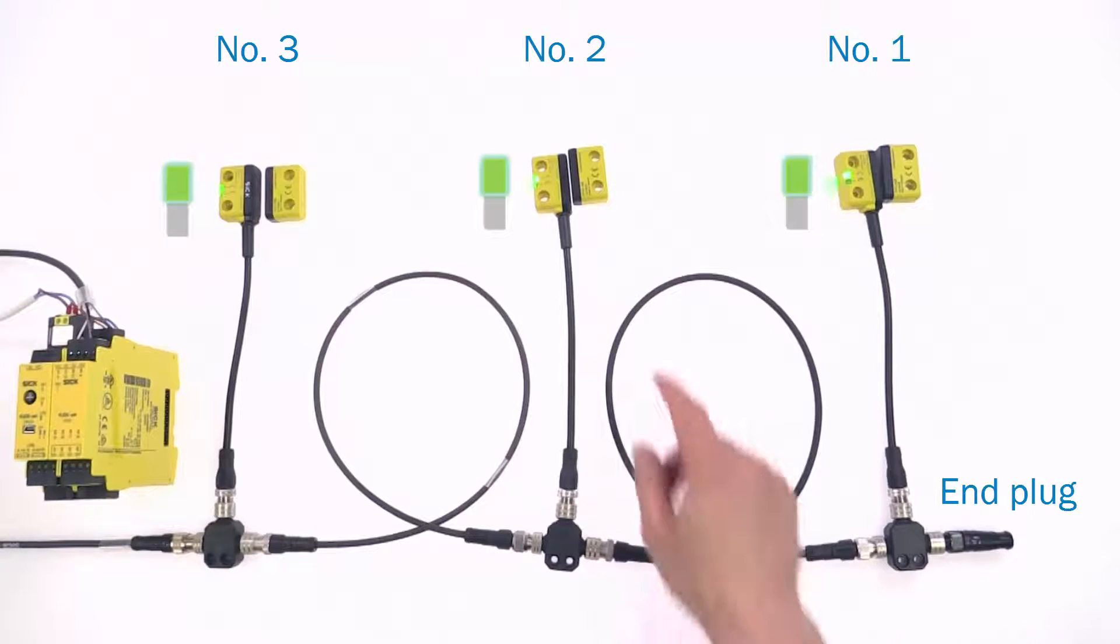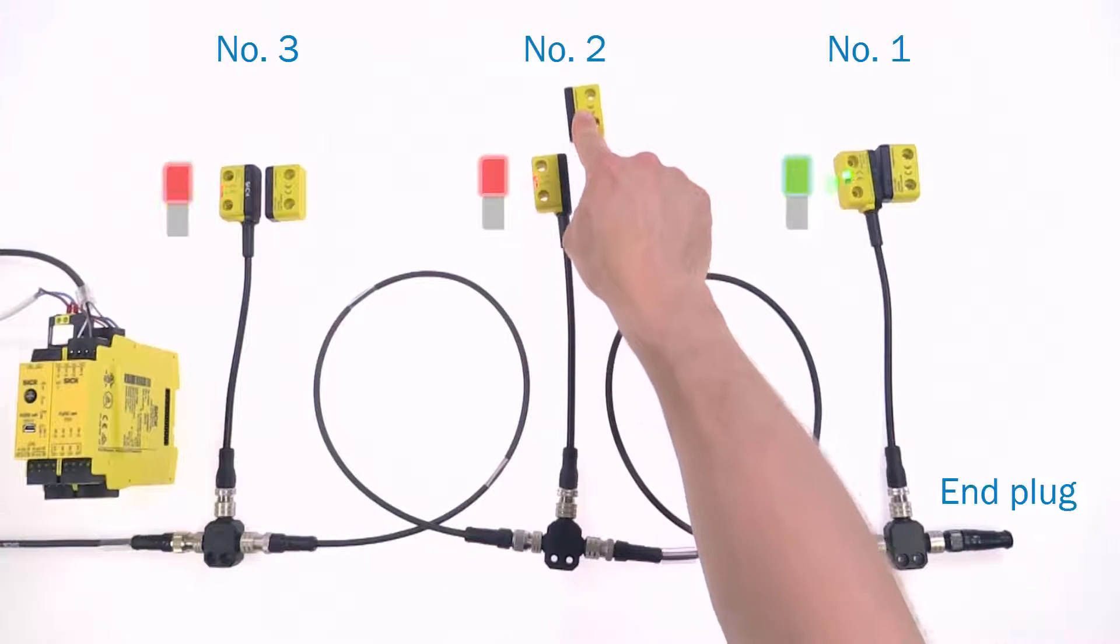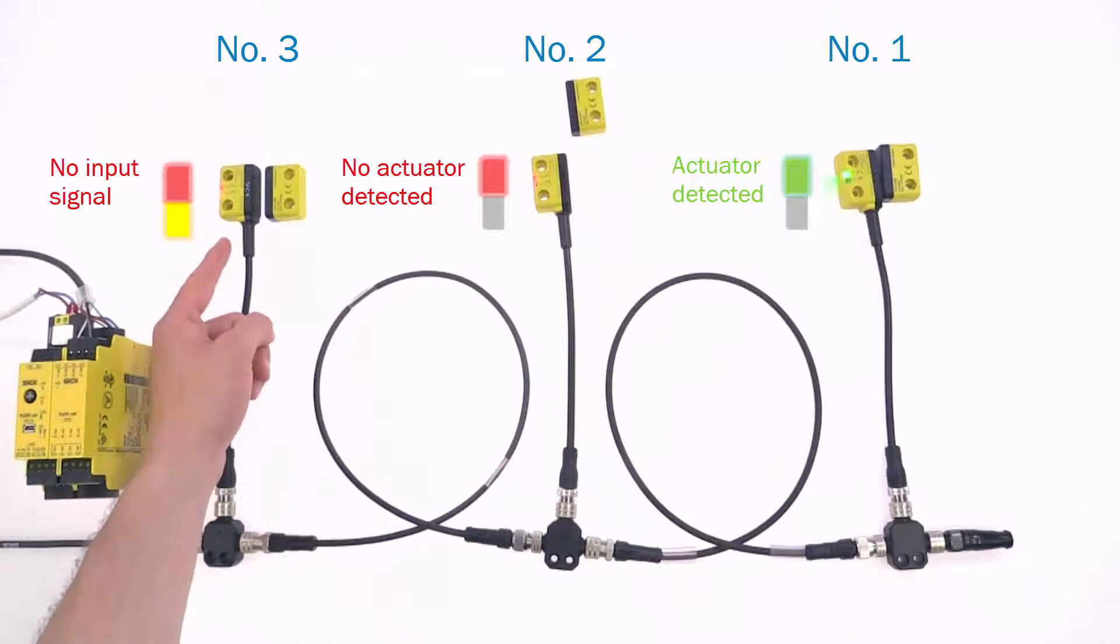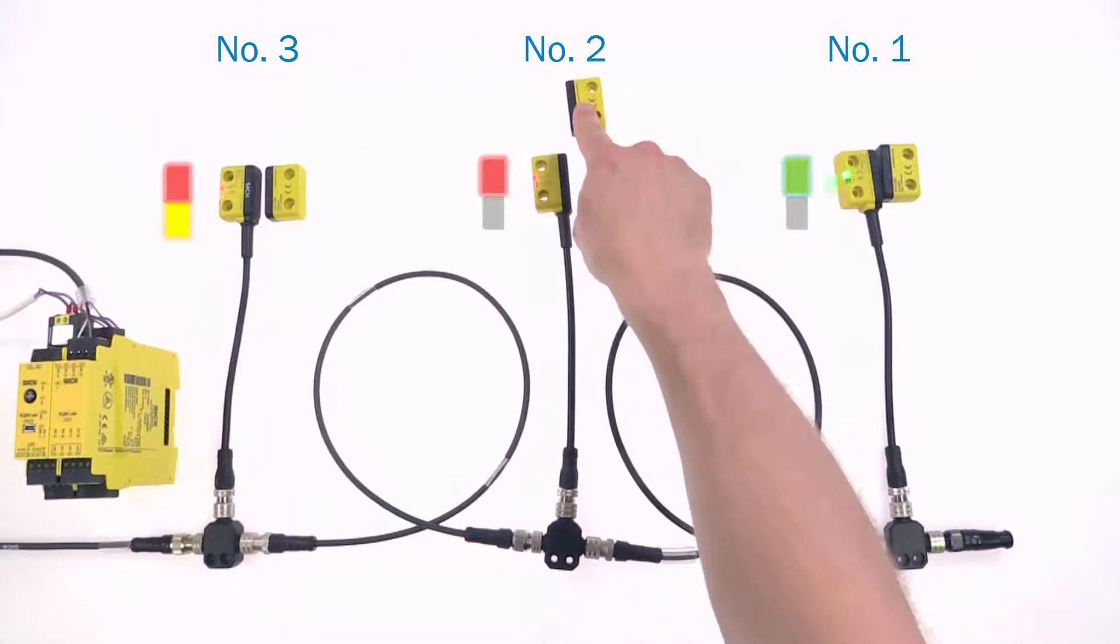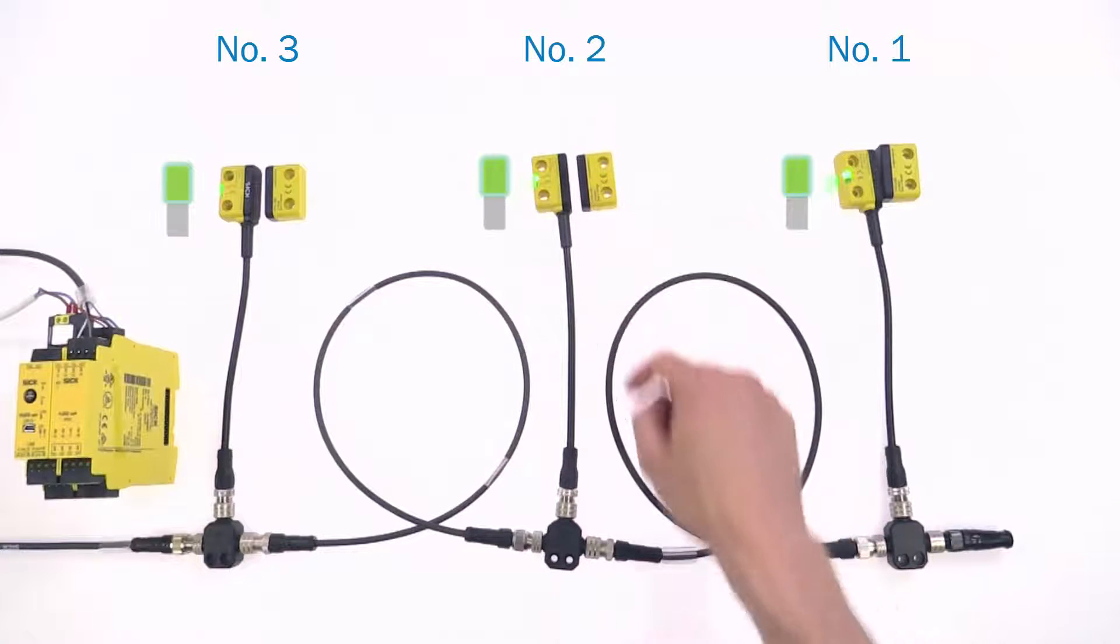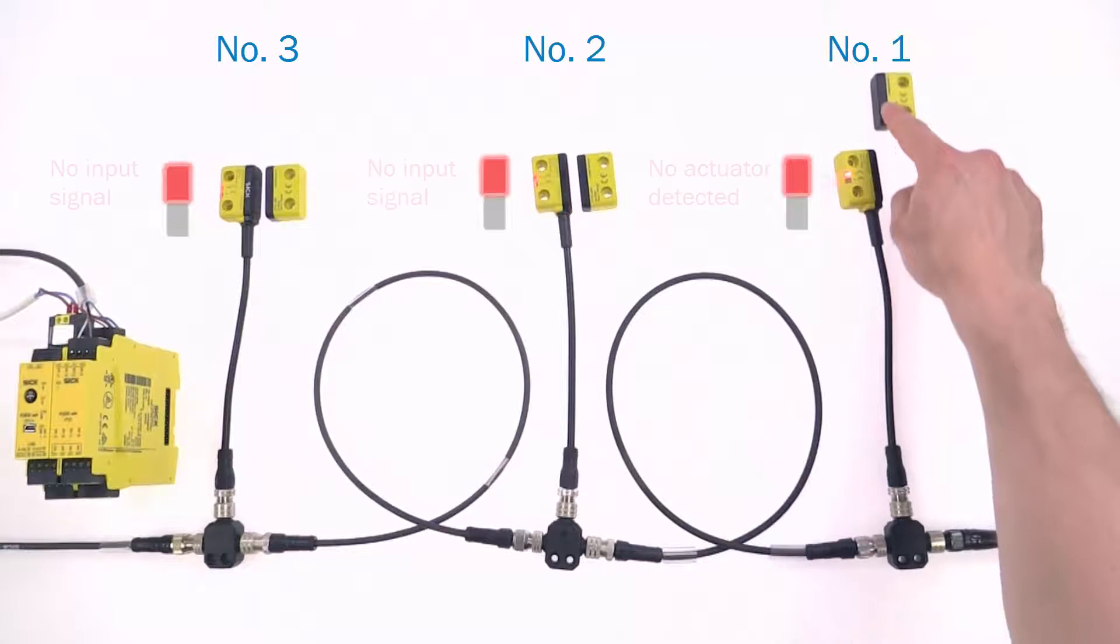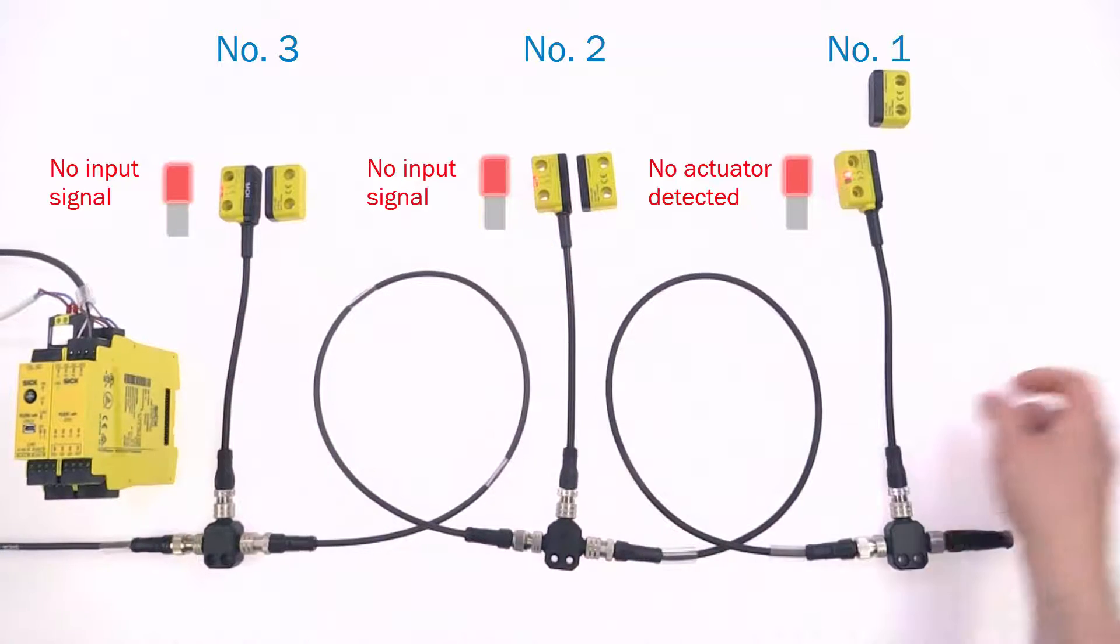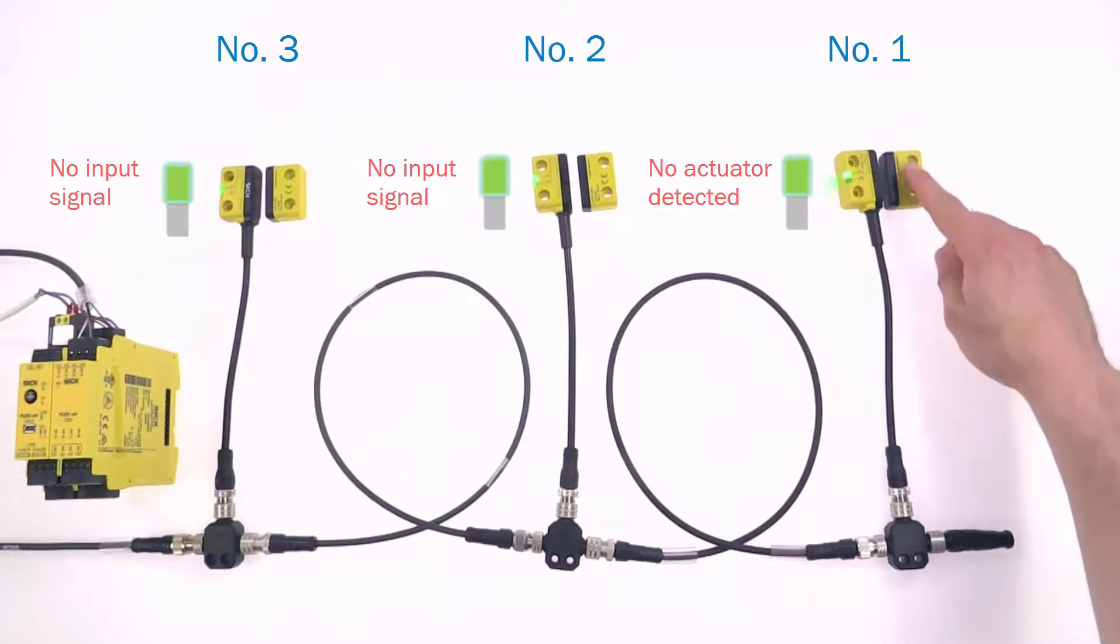If no actuator is present, or if there is a fault, the OSSD outputs of sensor 2 are low. Sensor 3 will get no input signals and will also keep its OSSD outputs low. If the OSSD outputs of the first sensor are low, all following sensors report that they get no inputs.